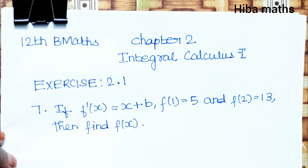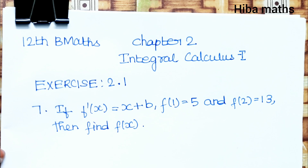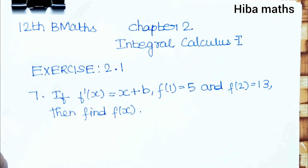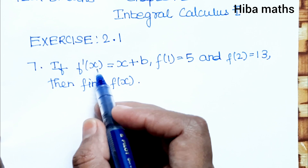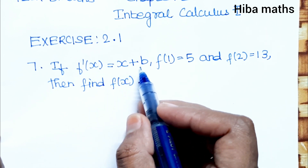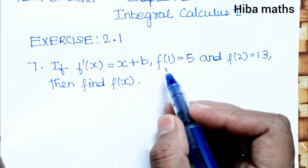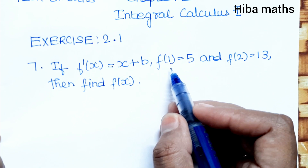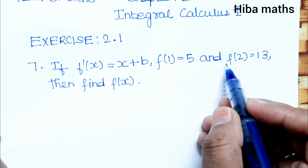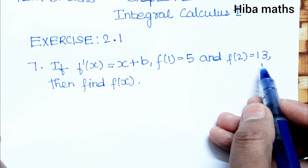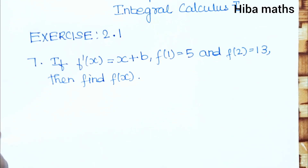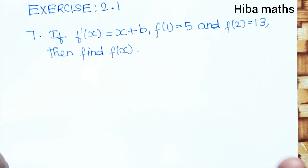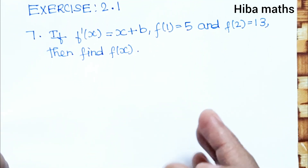Hello students, welcome to Heba Max 12 Standard Business Math, Chapter 2 Integral Calculus, Exercise 2.1, Question 7. If f'(x) is equal to x plus b, and f(1) is equal to 5 and f(2) is equal to 13, then find f(x). To solve the problem, f(1) and f(2) are derived from f'(x).